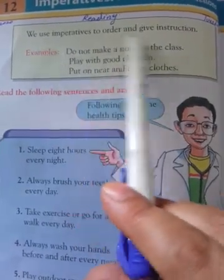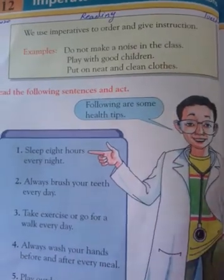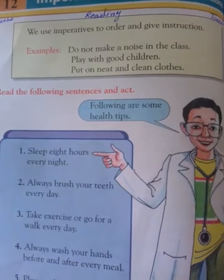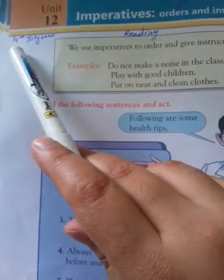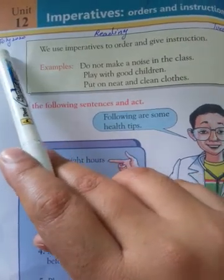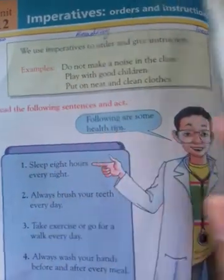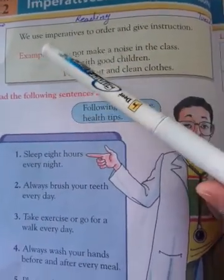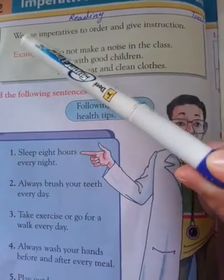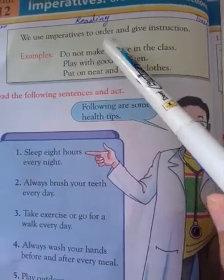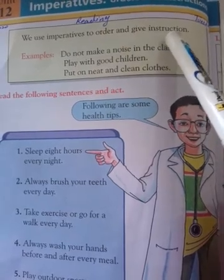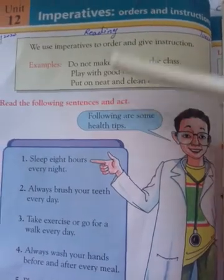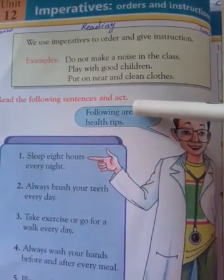Imperatives are used for giving orders and instructions — کس کے لیے؟ حکم دینے کے لیے یا پھر ہدایات دینے کے لیے. Before starting our unit, students write down today's date. Today is 14 July 2020 and the day is Tuesday. Now we will start our unit. We use imperatives to give orders and instructions. ہم imperative یا صیغہ امر جسے کہا جاتا ہے — امر یعنی حکم دینا.